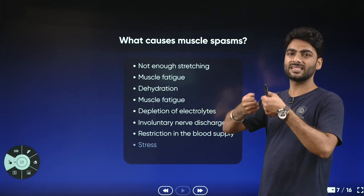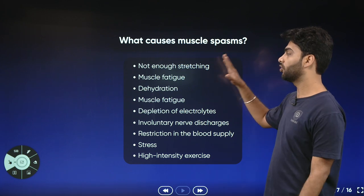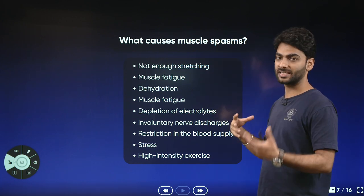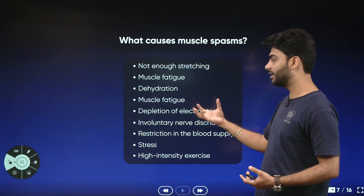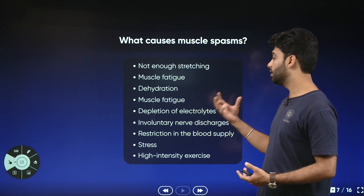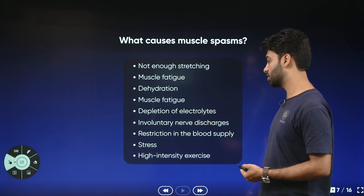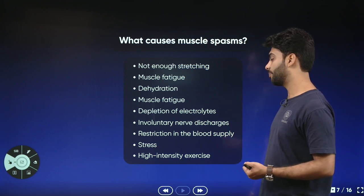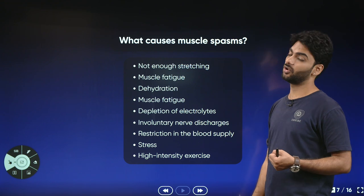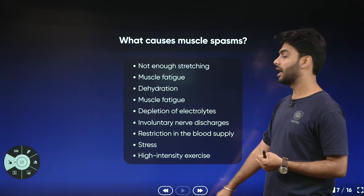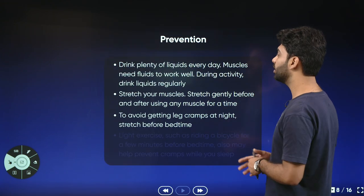What causes a muscle spasm? It is caused by not enough stretching or exercise, muscle fatigue, dehydration, depletion of electrolytes, involuntary nerve discharges, restriction in blood supply, stress, and high-intensity exercise — all of these can cause a muscle spasm.